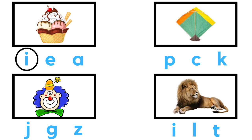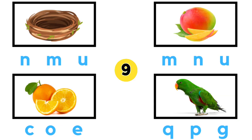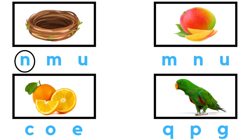I for Ice Cream, K for Kite, J for Joker, L for Lion. N for Nest, M for Mango, O for Orange.